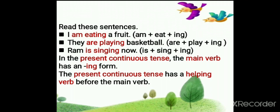'Are playing.' With 'are,' we are using -ing form of verb. 'Is singing.' With 'is,' we are using -ing form of verb in the present continuous tense.